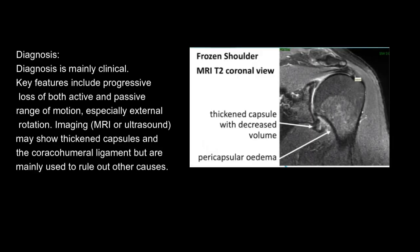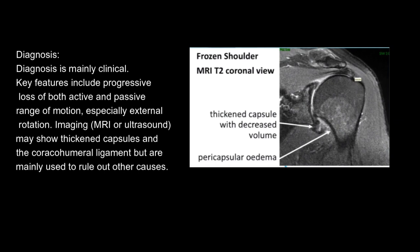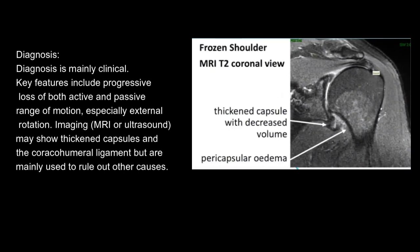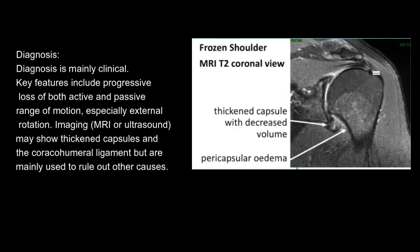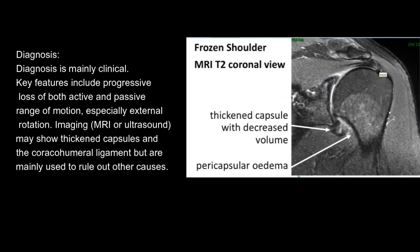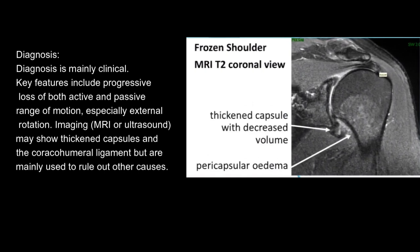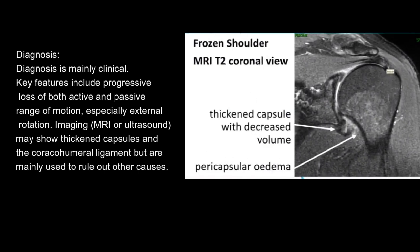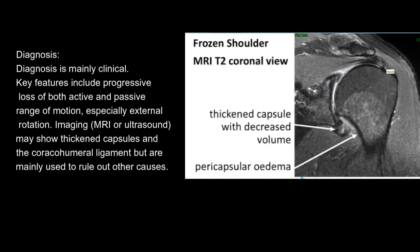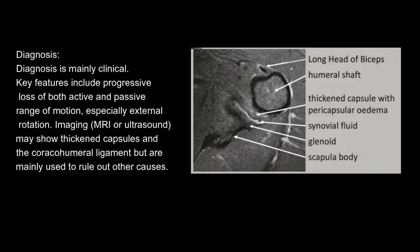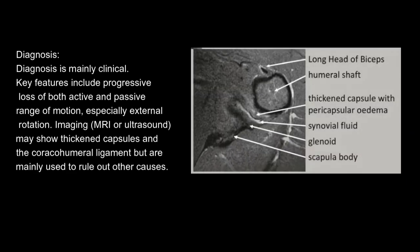Diagnosis is mainly clinical. Key features include progressive loss of both active and passive range of motion, especially external rotation. Imaging — MRI or ultrasound — may show thickened capsules and the coracohumeral ligament, but are mainly used to rule out other causes.